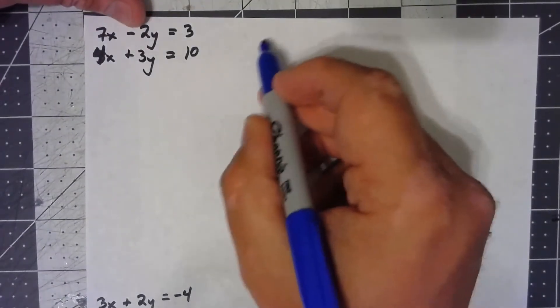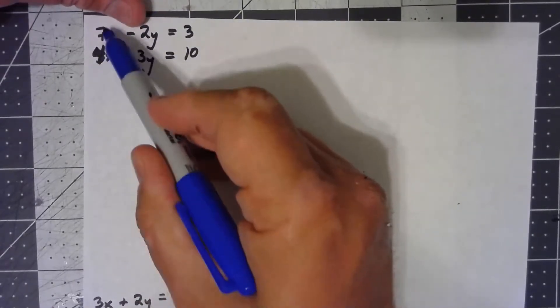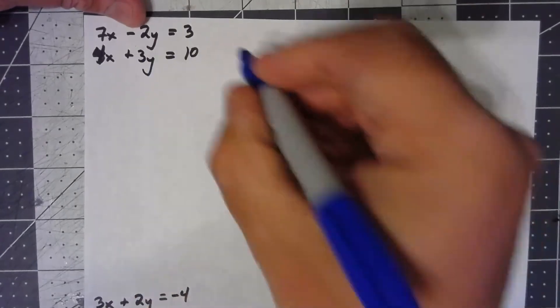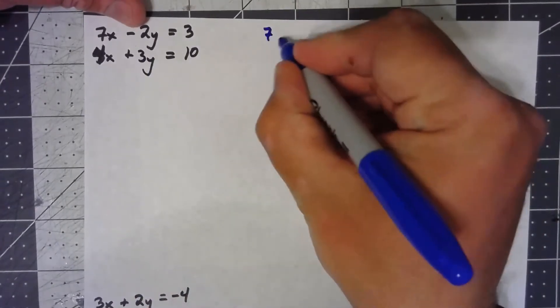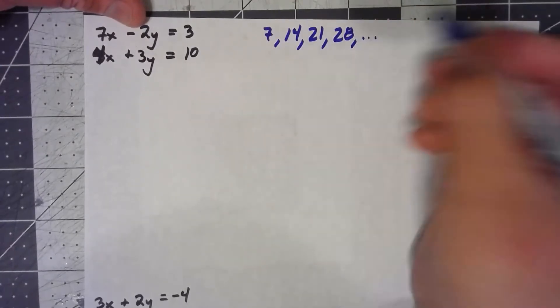One trick that can be used is take your first numbers, the 7 and the 4 in this case, and start writing out multiples. So we've got 7, we've got 14, we've got 21, 28, and so on.